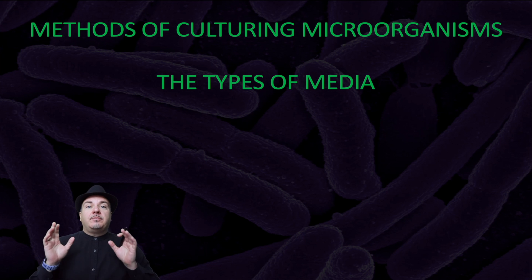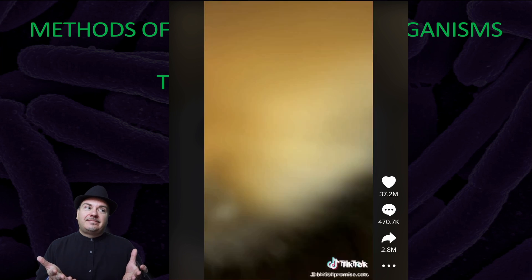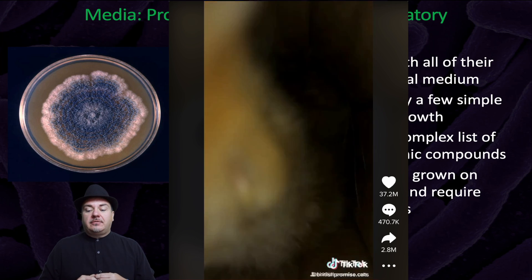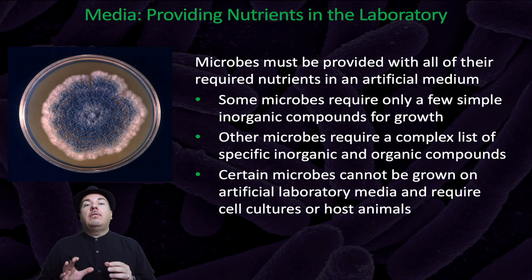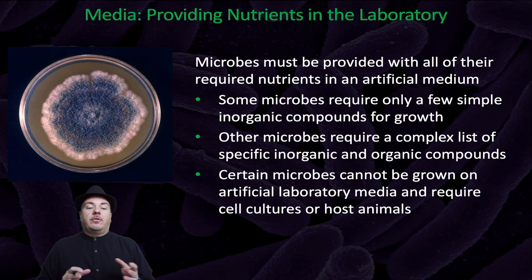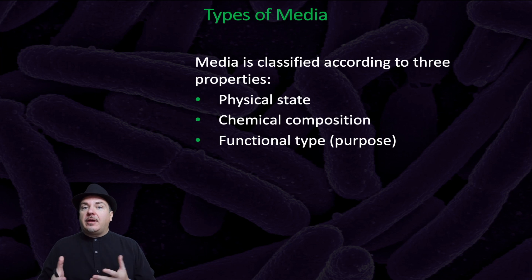We're going to be discussing media — not social media, but the media used to grow our microbes in. Microbes must be provided with all of the required nutrients in an artificial medium. Some microbes require only a few simple inorganic compounds for growth, while others require a complex list of specific inorganic and organic compounds. Certain microbes cannot be grown on artificial laboratory media and require cell cultures or host animals. Media is classified according to three properties: physical state, chemical composition, and functional type, or its purpose.